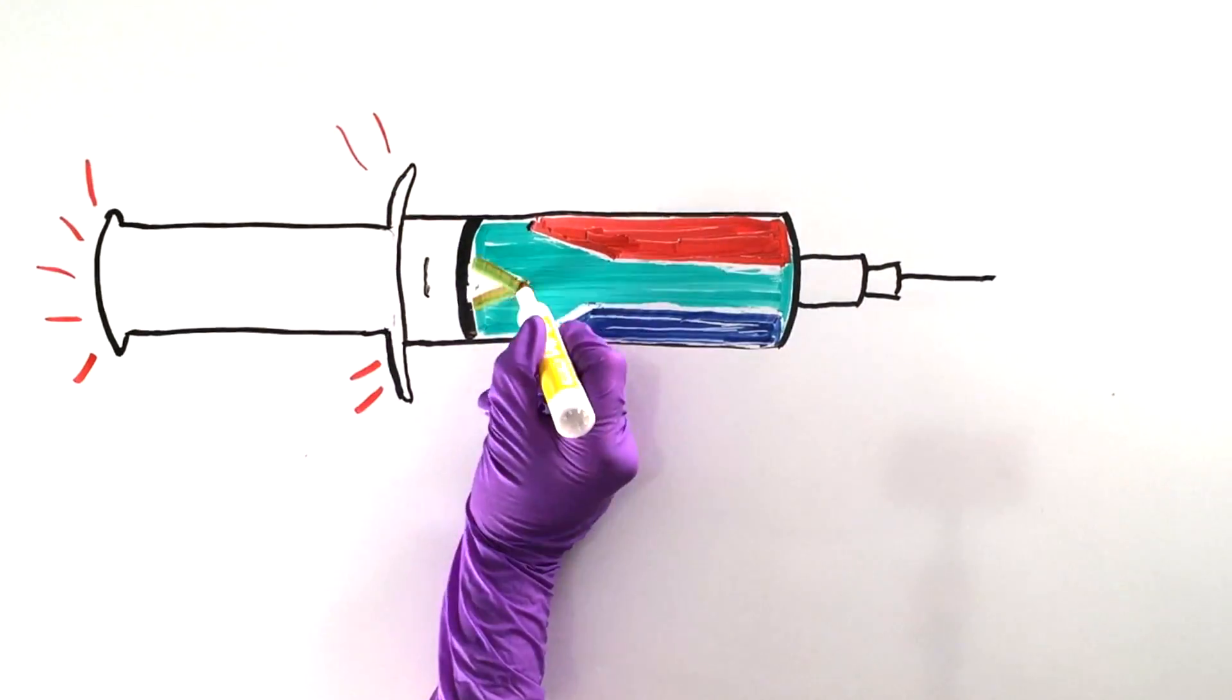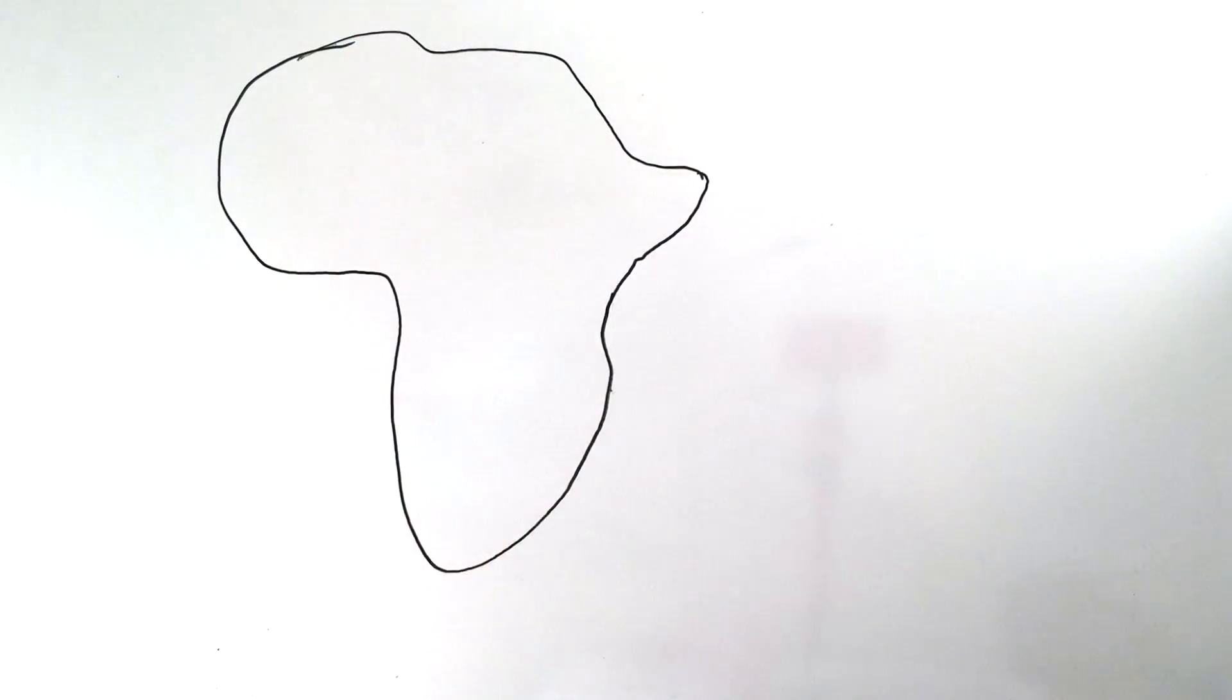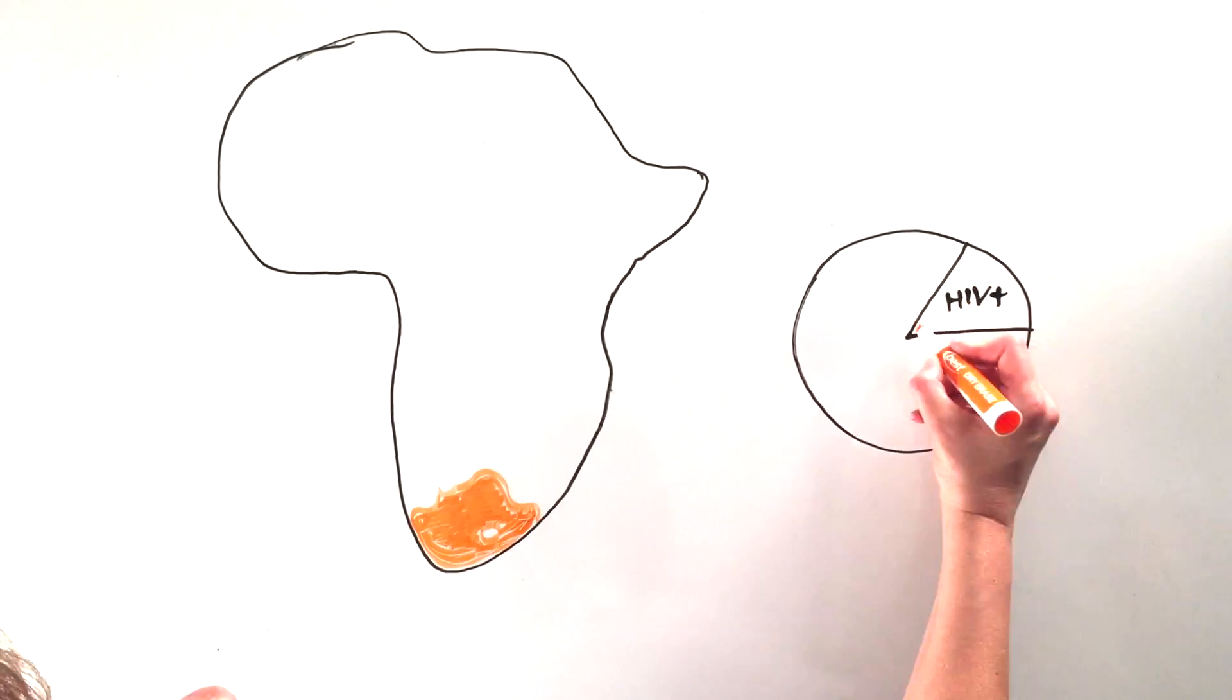They also adjusted the vaccine to target the HIV subtype common in South Africa, where the prevalence of HIV is among the highest in the world. Nearly 20% of adults in South Africa are living with HIV.